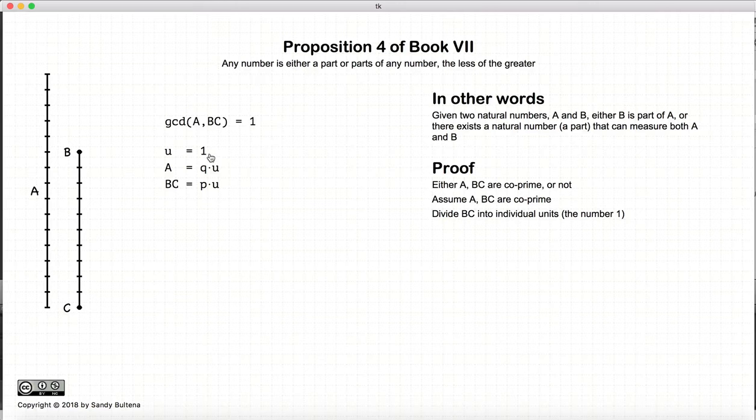So, let the unit equal 1, A is equal to, can be measured by the unit 1, and BC can also be measured by the unit 1. So, therefore, BC is composed of parts of A. And that's it for this particular situation.